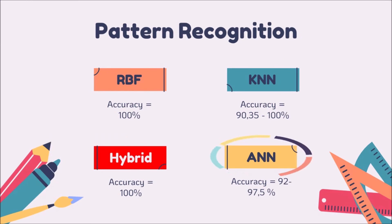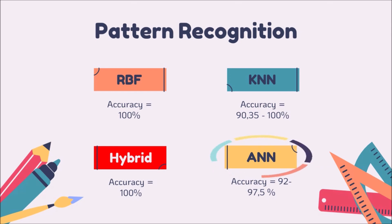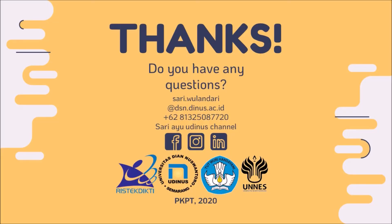Number five is pattern recognition. In previous studies, the pattern recognition method used includes neural network methods — both artificial neural network and radial basis function neural network. The most popular pattern recognition method is the artificial neural network. In summary, electronic nose systems for detection of diabetes have been surveyed, categorized, and discussed according to their mechanisms of action, and compared with one another and with their application.